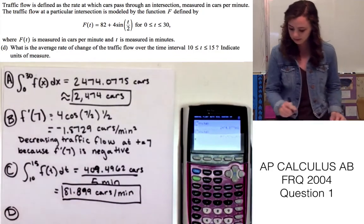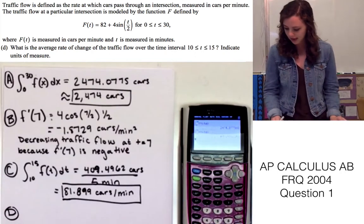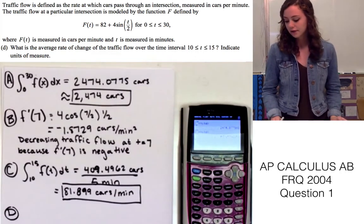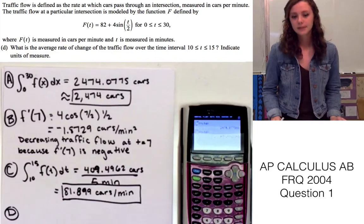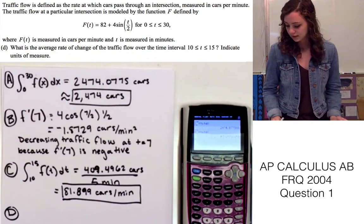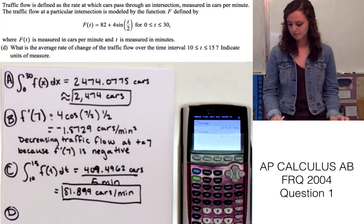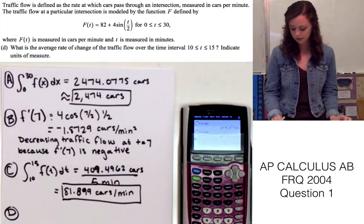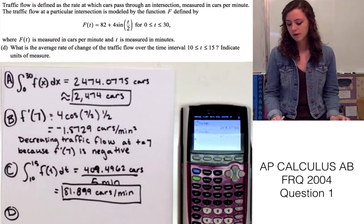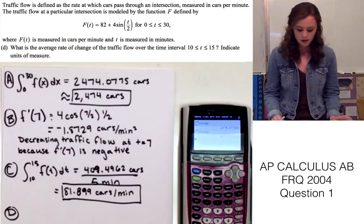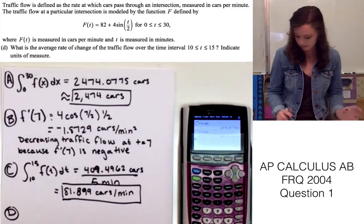Okay, so for part D, it's asking what the average rate of change of the traffic flow over the time interval 10 to 15 is, and we need to indicate the units of measure. So for this one, we can just use f(t), we don't have to use the integral or the derivative.